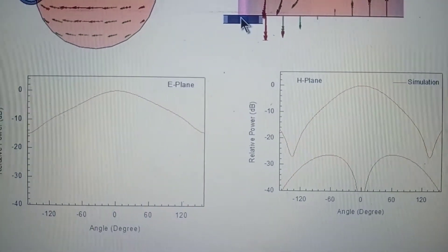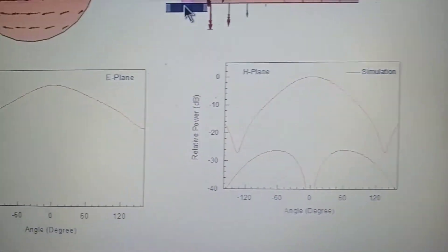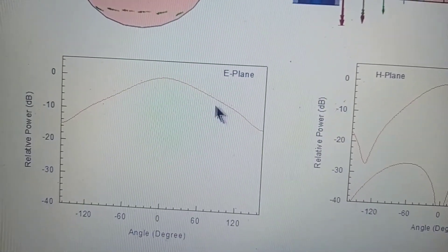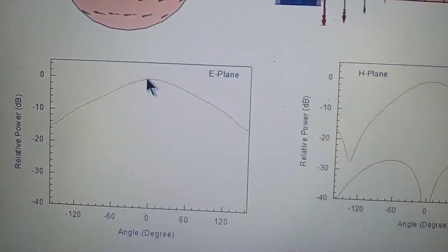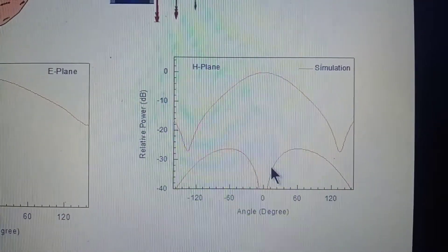There are two principal plane patterns - E plane and H plane. Here E plane co-pole radiation is broad and we have a good amount of gain. In H plane also co-pole is good, cross-pole also good.